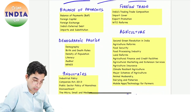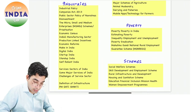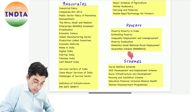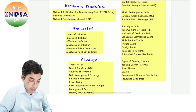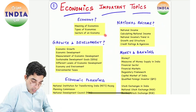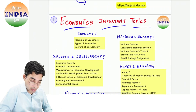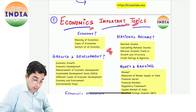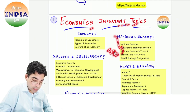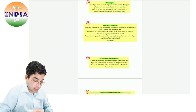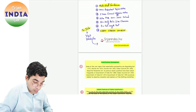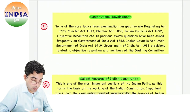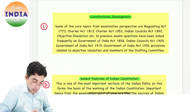Extra topics and schemes — ye saari cheezein apan consolidated ek jagah pe rakhenge, taaki exam ke paas aate waqt hamare paas ek checklist bhi hoga ki ye saari cheezein humein pata honi chahiye. Iss tarike se isko backed by some concise notes prepare karenge. Economics ke important topics, terminologies jo main itne time se aapko bolta aa raha hoon, wo bhi hum issi mein include kar lenge. Ye ek themes hai — probable questions kis direction mein zyada aa rahe hain, kin areas se zyada questions ban rahe hain, kya approach ho rahi hai.